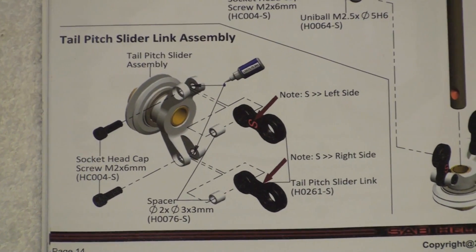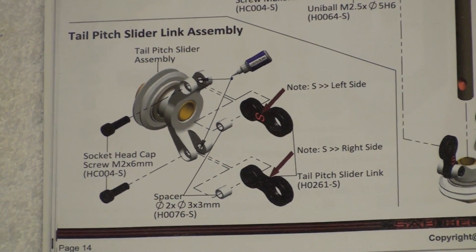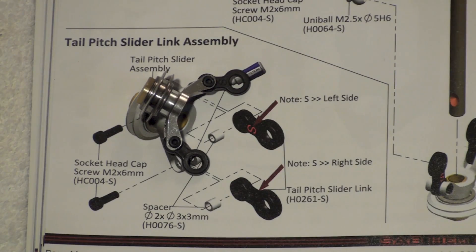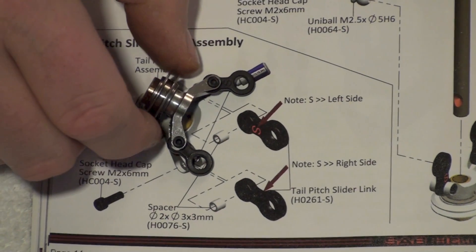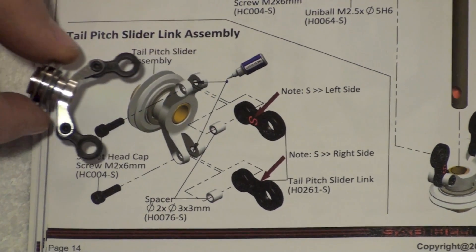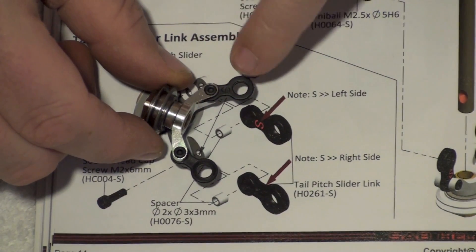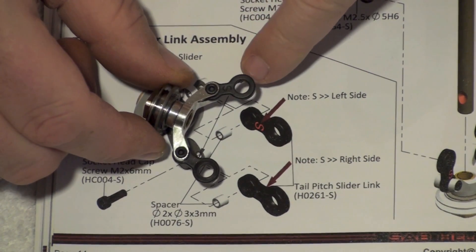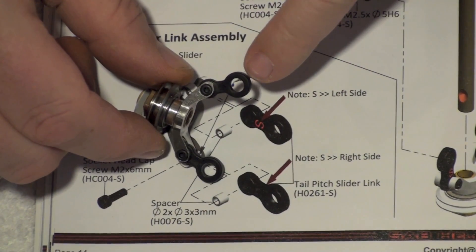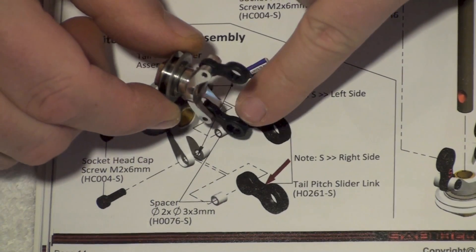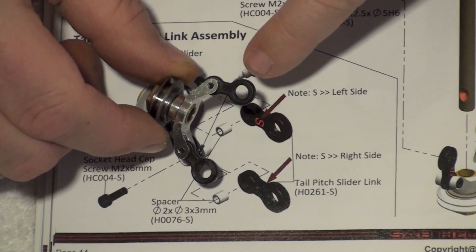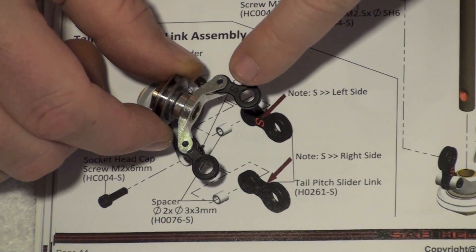So I'm going to get that together and then we'll come back and I'll show you what that looks like. Okay, so here we have the assembled tail pitch slider. Just like the manual here for reference, we have the letter S facing up on this side, and as you rotate the assembly you'll be the same on the other side, so they face opposite of one another.